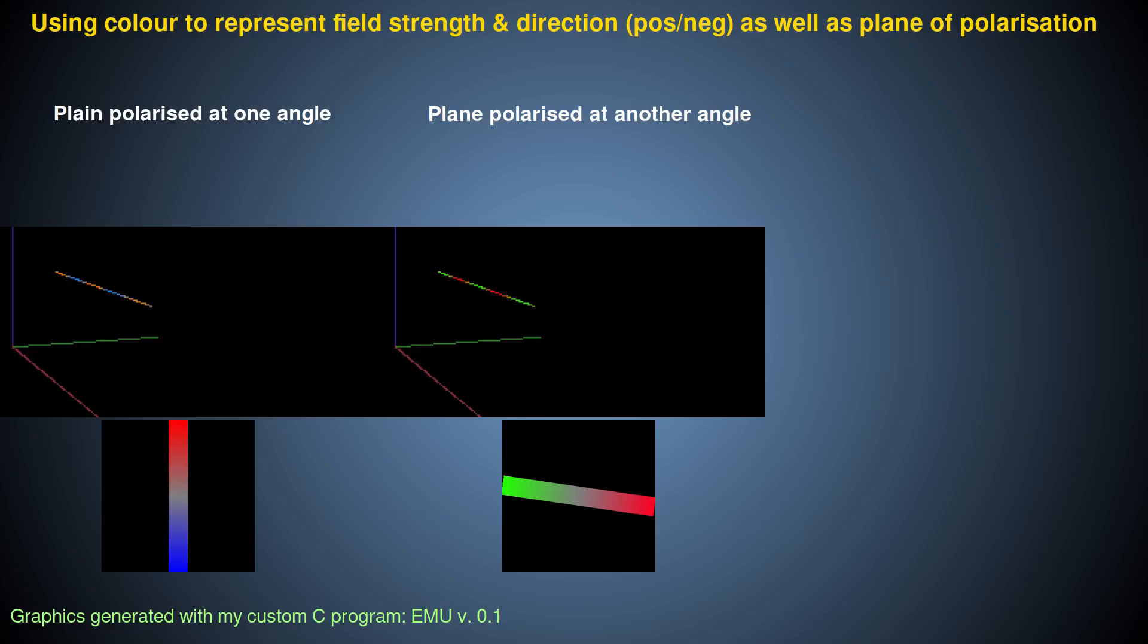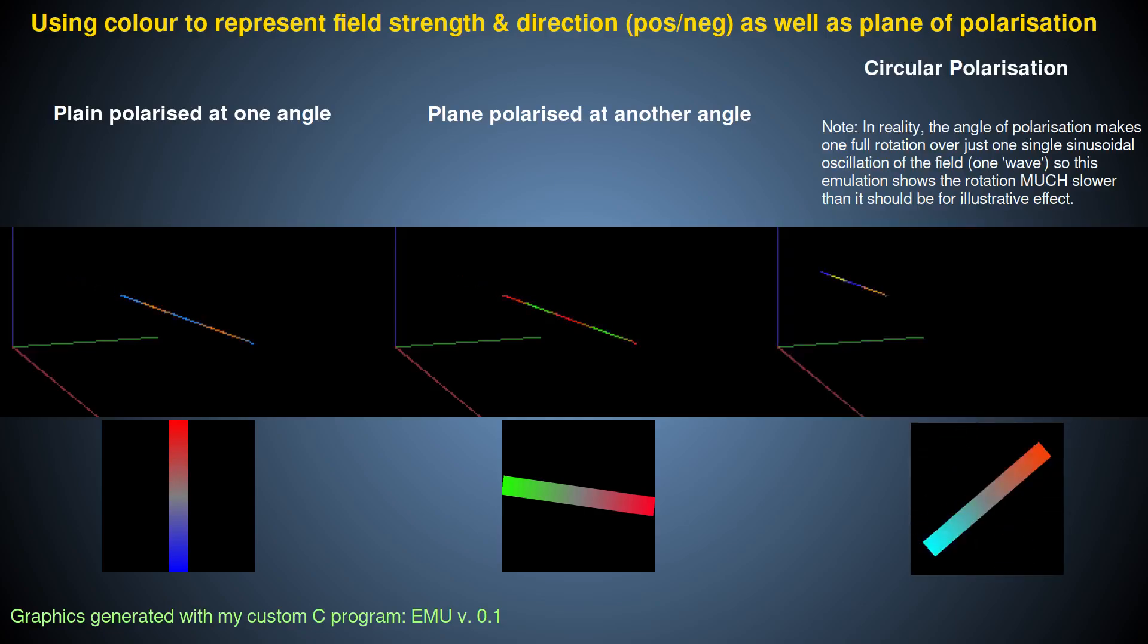Likewise, using this color representation, we can also represent a circularly polarized EM ray along a single straight line, like this. Notice that in all cases, changing the polarization state does not affect the actual shape of the EM wave ray. It's just a straight one-dimensional line in all cases, regardless of polarization angle.